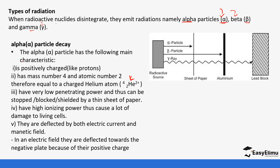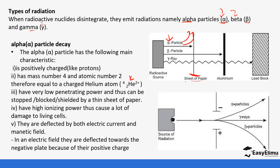The alpha particle is the first one shown in the representation — it is deflected, and some books will show the deflection with the arrow going up. Once it is stopped by a piece of paper, when you apply an electromagnetic field it is attracted to the negative plate because it is positive in nature.